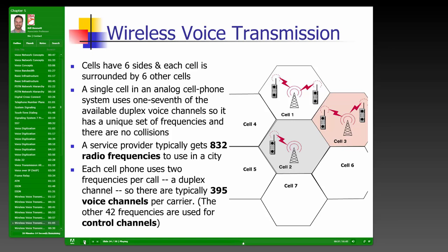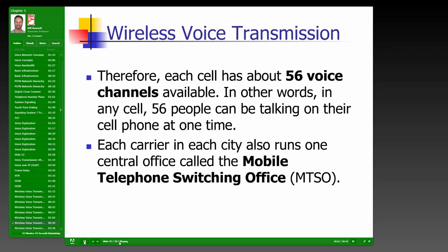Within a given cell there are about 56 voice channels available, meaning 56 simultaneous conversations per cell. Each carrier in each city also runs one central office called an MTSO — Mobile Telephone Switching Office. Cells are six-sided (hexagonal), each surrounded by six other cells, forming a honeycomb shape. Each cell has a base station consisting of a tower and a small building containing the radio equipment.